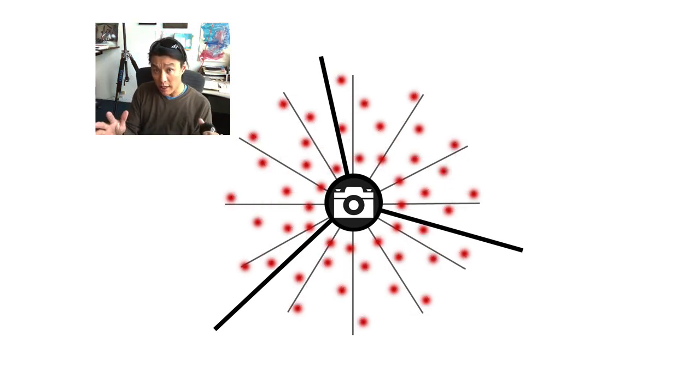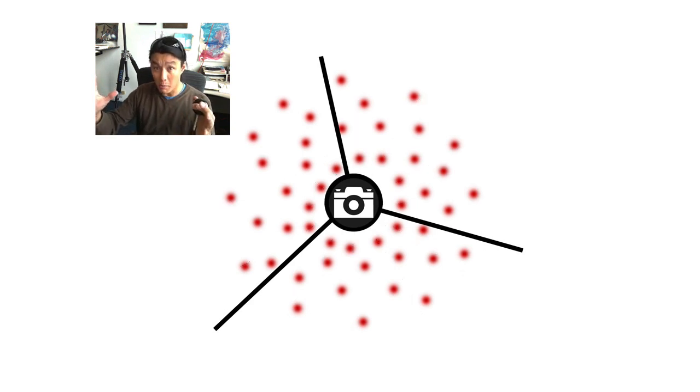So by staggering our light positions a little bit off of each rib, we actually get better light coverage over the surface of our object.